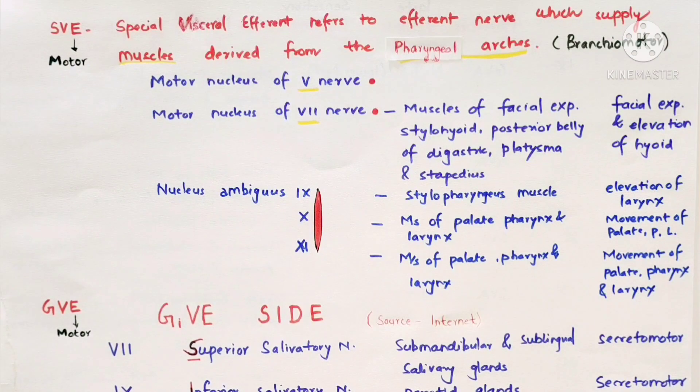Hello everyone, today we will discuss what is important of cranial nerves that can connect with the exam. First is special visceral efferent fibers, general visceral efferent fibers, and nucleus of tractus solitarius. Efferent means motor fibers and afferent means sensory fibers.